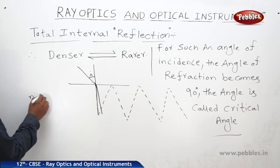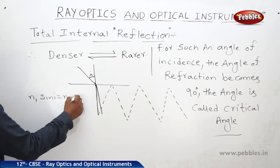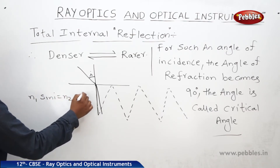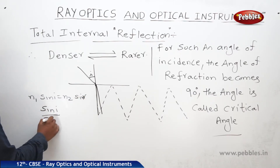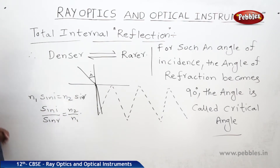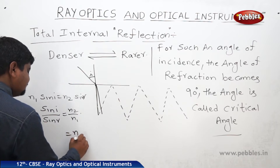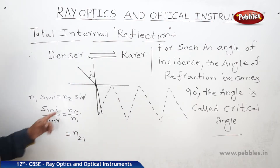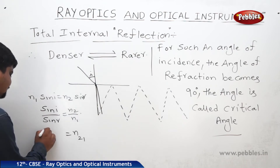What is Snell's law? N1 sin i = N2 sin r, and from this we can write sin i / sin r = N2 / N1. N2/N1 we can call N21, the refractive index of the second medium with respect to the first medium.